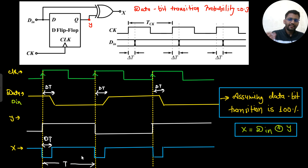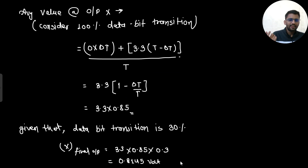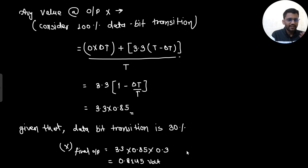This cycle is being repeated. I calculated the average value of X, got 3.3 × 0.85, but since the assumed 100% transition was not actual — the given rate is 30% — I multiplied by 0.3 to get the final answer. I hope you understood many new things from this question. Please share this video with your friends and in Telegram groups so it reaches maximum aspirants. Let me know in the comments which topic you want questions from.